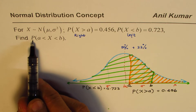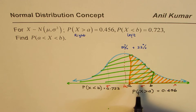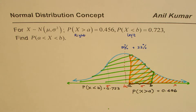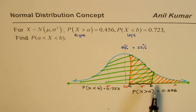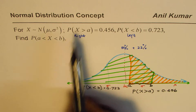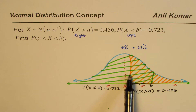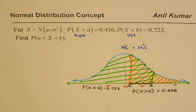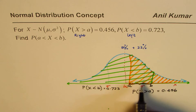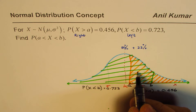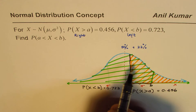What we need to find is the probability when X is between A and B — that is, the area of the portion of the graph between these two points. The question is: can we find this without finding A and B explicitly, without knowing the mean and standard deviation? Yes, we can. The right side is covered by the first probability and the left side by the second, with an overlap in between.